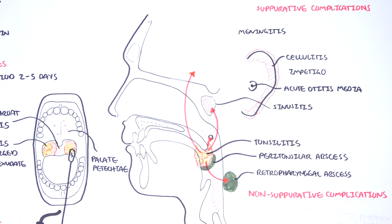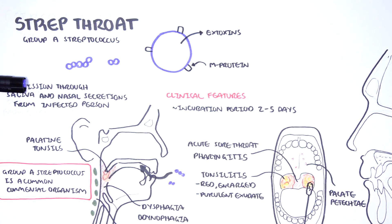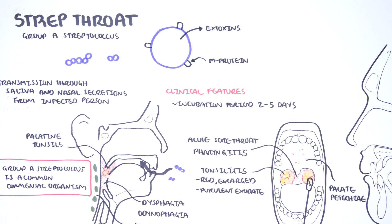Meningitis, a serious complication, as well as osteomyelitis and septic arthritis, another very serious complication. The suppurative complications of Group A Streptococcus is because the bacteria is able to spread from its initial location, mounting an immune response and inflammation elsewhere.